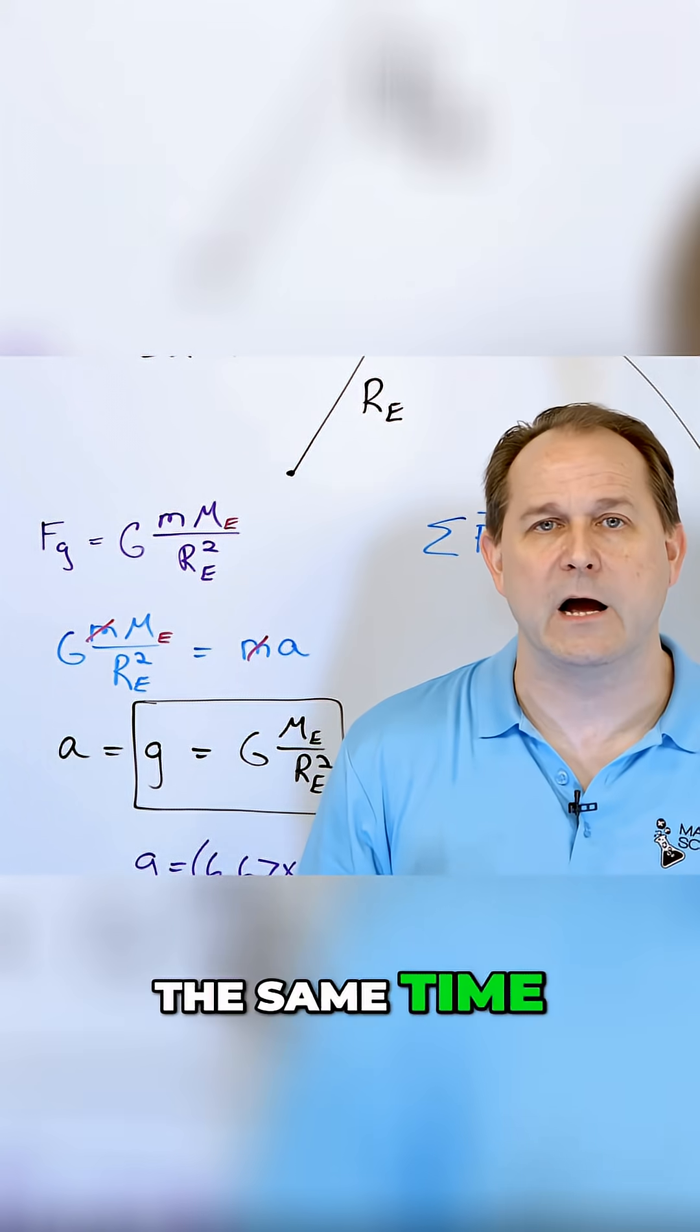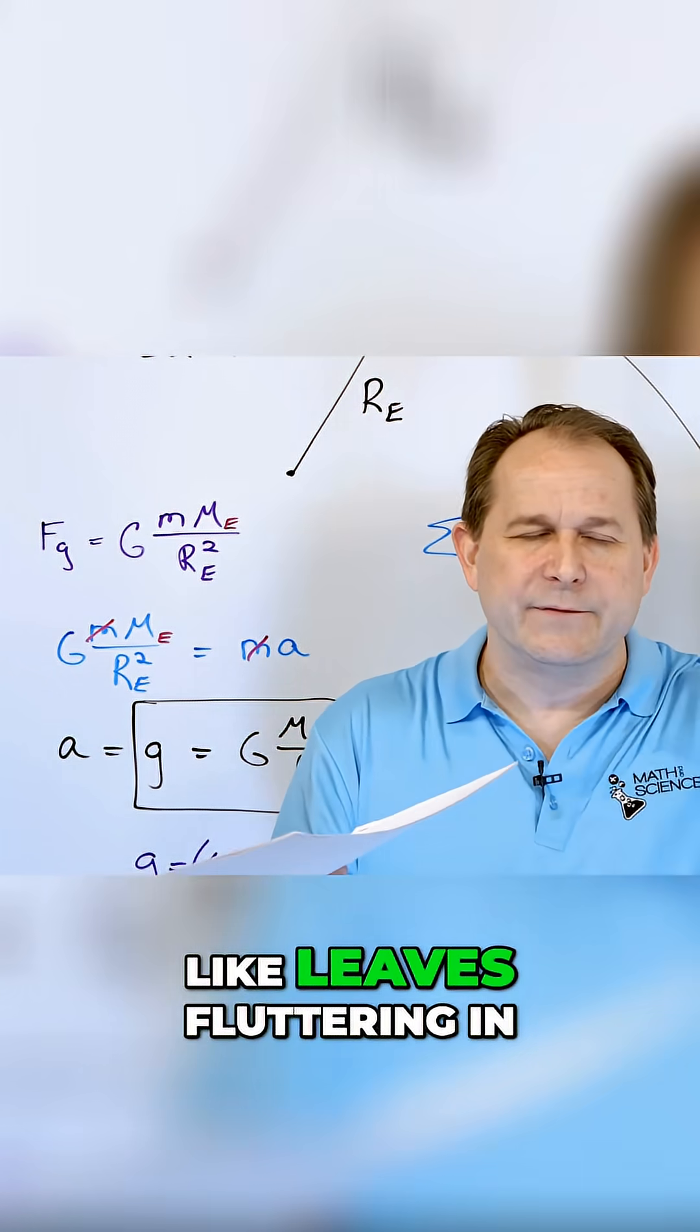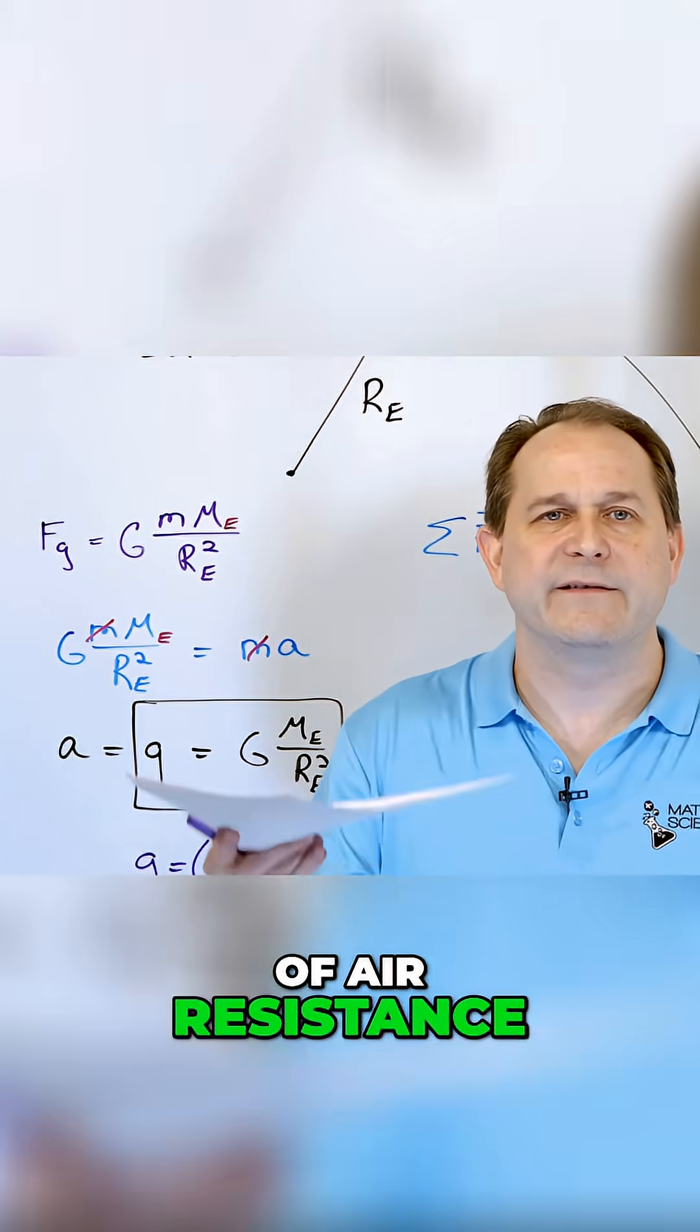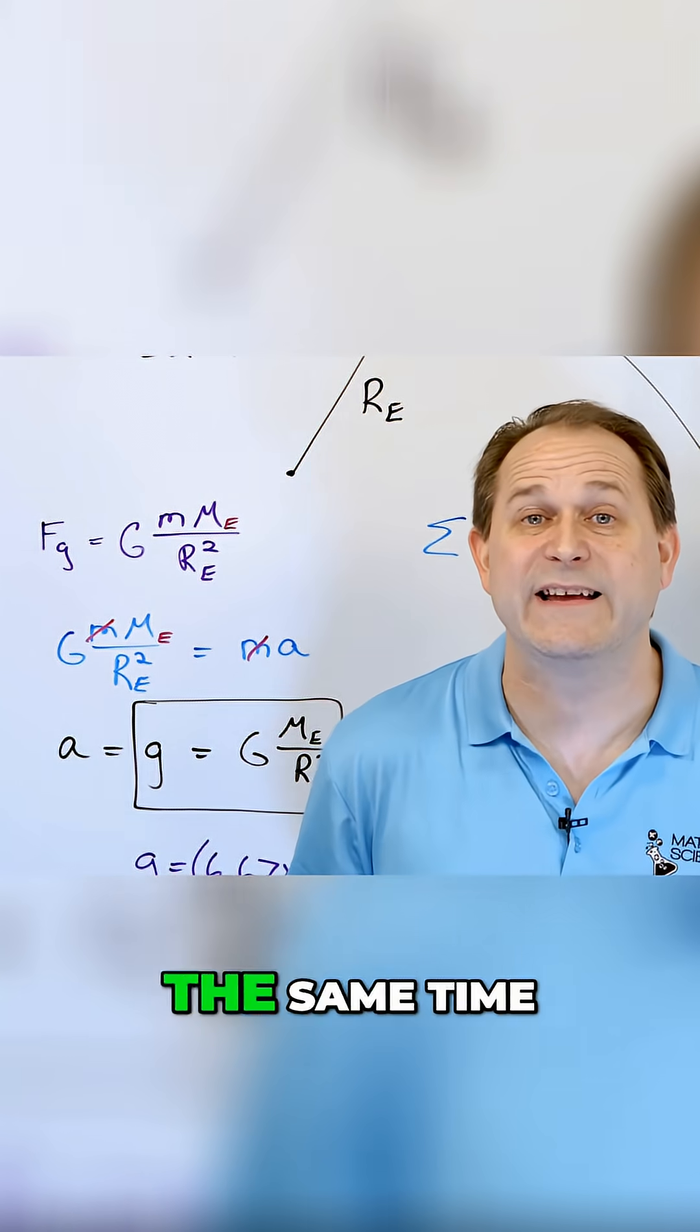And they will both hit the ground at the same time. If they ever don't do that, like leaves fluttering in the wind, that's just because of air resistance. But in the absence of air resistance, everything will accelerate at the same rate and hit the ground at the same time.